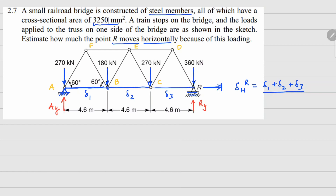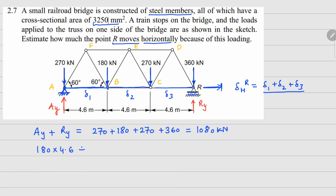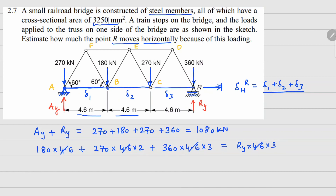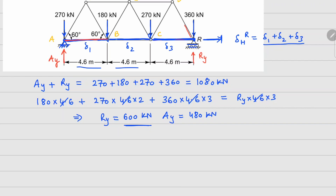At point A, although it is a fixed support, we are not using any horizontal reaction because there is no other force in the x-direction. Force balance gives: Ay + Ry = 270 + 180 + 360 = 1080 kN. Taking moments about point A: 180×4.6 + 270×4.6×2 + 360×4.6×3 = Ry×4.6×3. The 4.6 cancels, giving Ry = 600 kN and Ay = 480 kN.